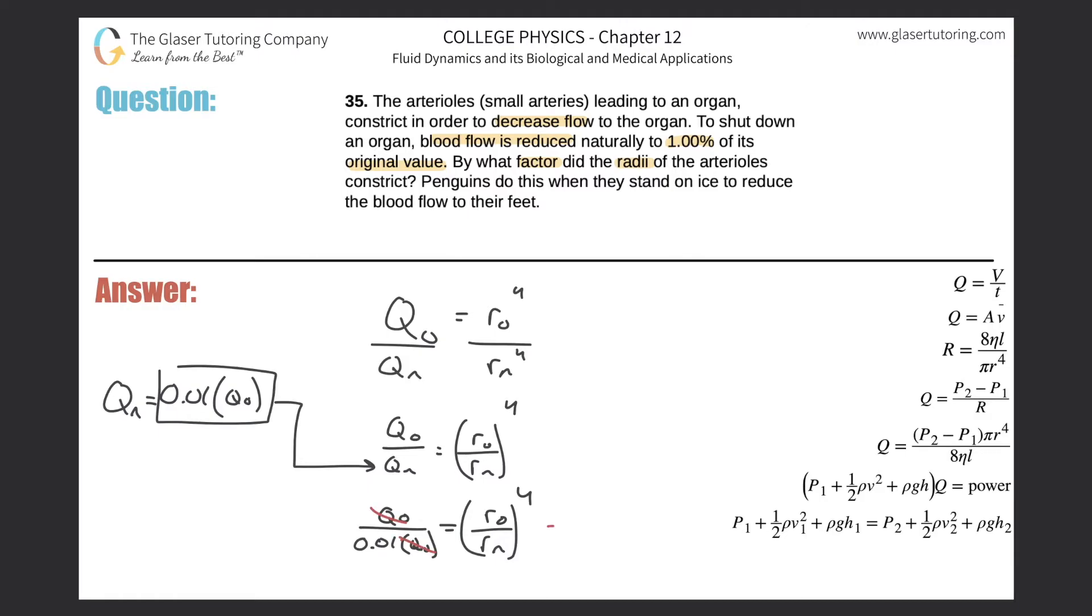Notice what happens here: these Q's cancel, right? So this leaves me now with exactly basically what I want. I wanted to cancel those Q sub o's. Alright, so this is now saying that one over 0.01 is going to be equal to this fraction raised to the fourth power.